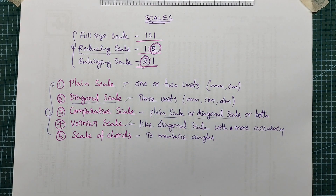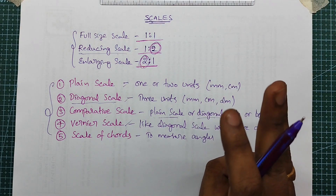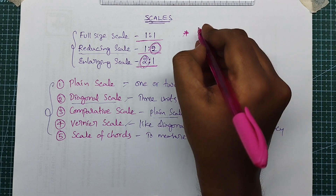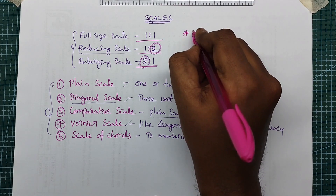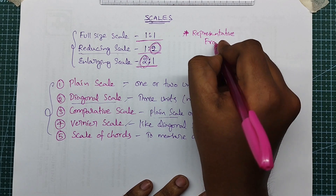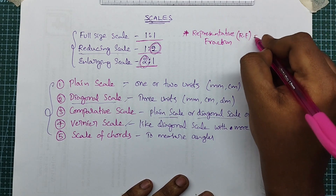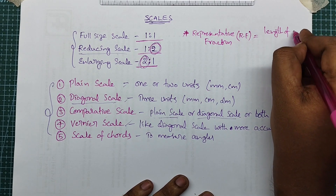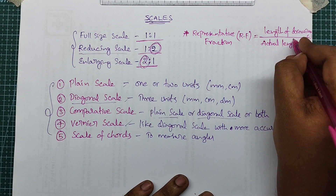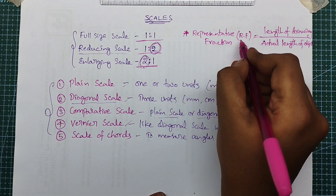There are three major points when solving scales. The first is the Representative Fraction, or RF. RF is the length of the drawing divided by the actual length of the object. We calculate the RF value when we have the length of the drawing and the actual length of the object.